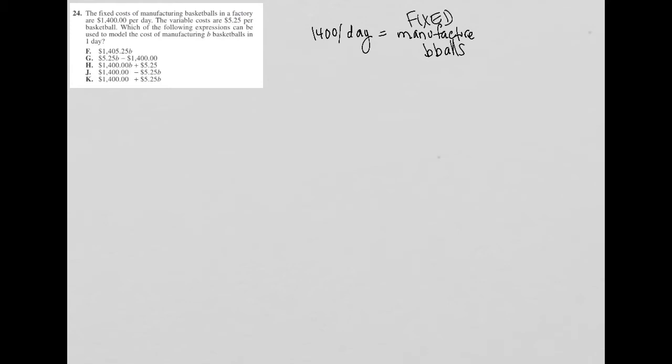So $1,400 per day equals manufacture basketballs, and this is fixed, as opposed to a variable cost. The variable costs are $5.25 per basketball. So we add to that $5.25 per basketball.